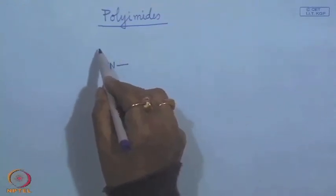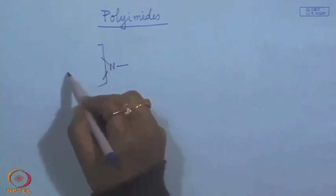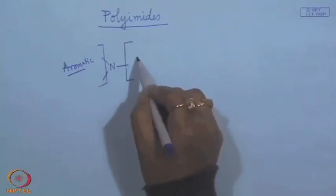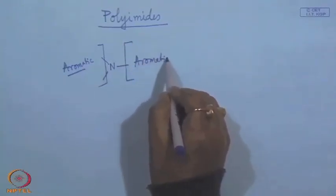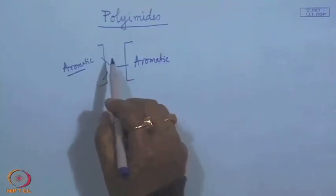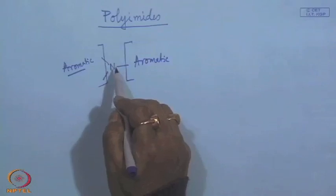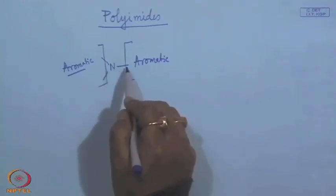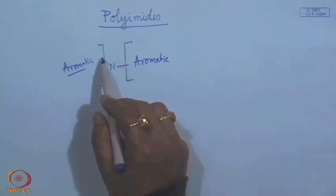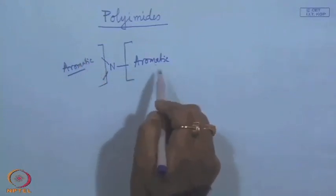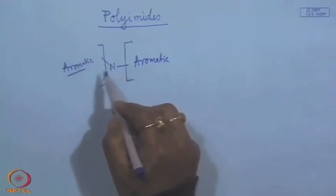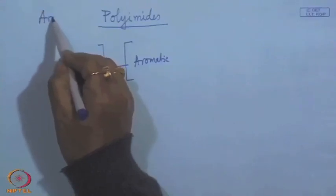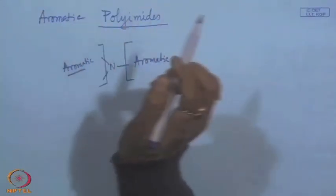In polyimides, both sides of the imide linkage are aromatic in the polymer backbone, and nitrogen is connected to three different functional sites. If those three sites are all aromatic, we get an aromatic polyimide. One should not confuse aromatic polyamides with aromatic polyimides.